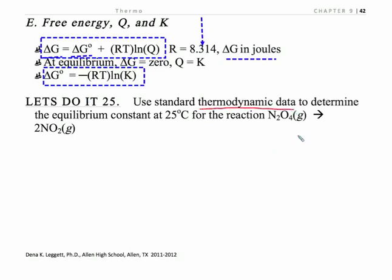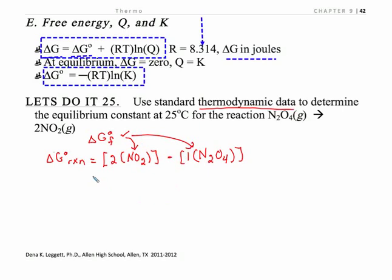Using standard thermodynamic data, determine the equilibrium constant. Well, the standard thermodynamic data that I have are delta G naughts of formation. So I can get my delta G naught for this reaction by looking up the formation. It would be 2 times the delta G naught of formation of NO2 minus 1 times my delta G naught of formation of N2O4. Those would be both delta G naughts of formation. And I looked those up.